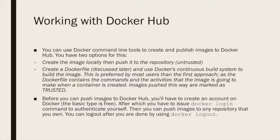To understand what automated means, you have to understand how Docker images are built. You can use Docker command line tools to create and publish images to Docker Hub. You have two options: either create the image locally, then push it to the repository — and this makes the image untrusted, as we're going to see why in a moment.